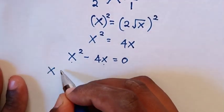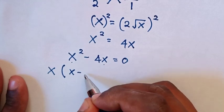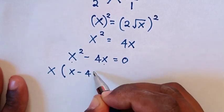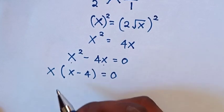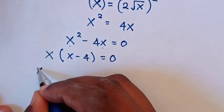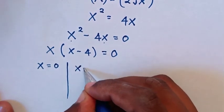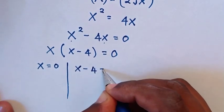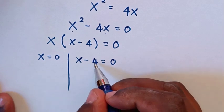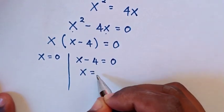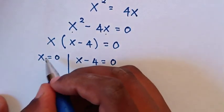So it will be x squared minus 4x is equal to 0. Then x is common, so we take x out of the bracket: x times x minus 4 is equal to 0. Then to solve, we have two cases: x is equal to 0, and x minus 4 is equal to 0, which gives x is equal to 4.